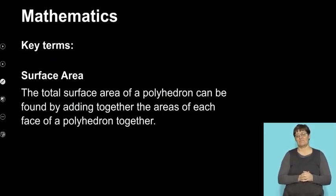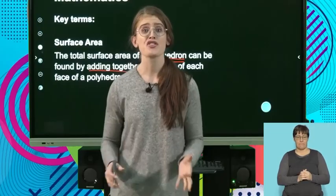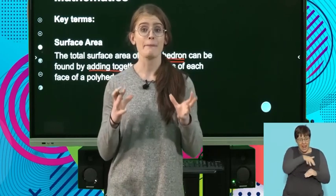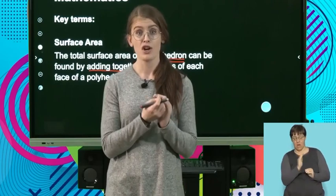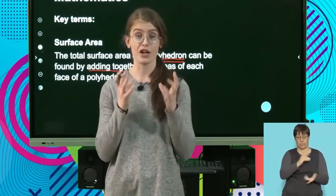The surface area can be defined as the total surface area of a polyhedron, and we know that a polyhedron is a three-dimensional shape. It can be found by adding together the areas of each face of a polyhedron together. So the surface area has to do with the area that the three-dimensional figure has on its outer surface.